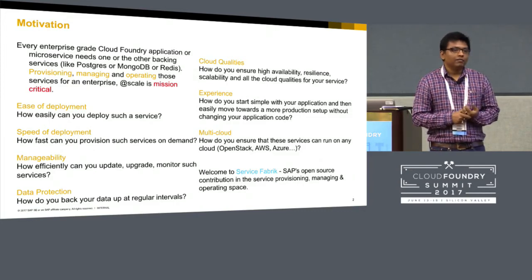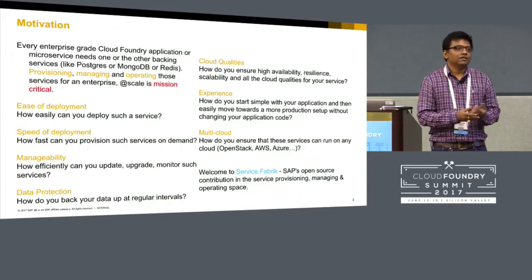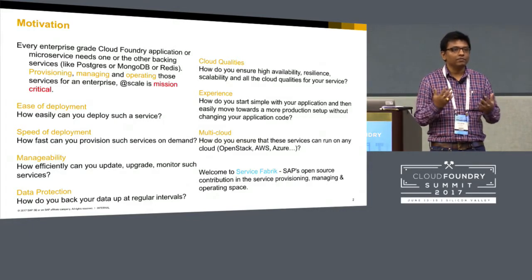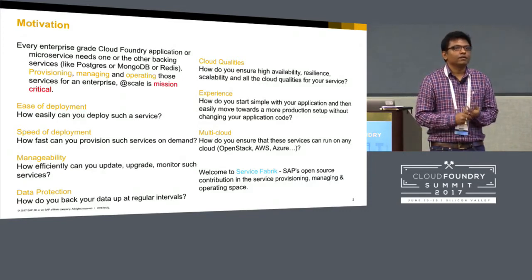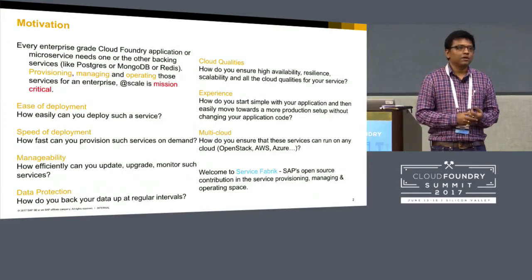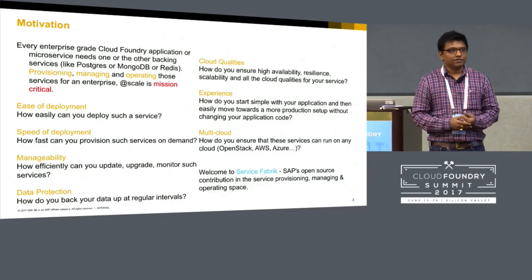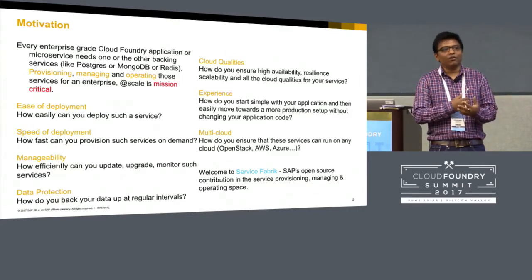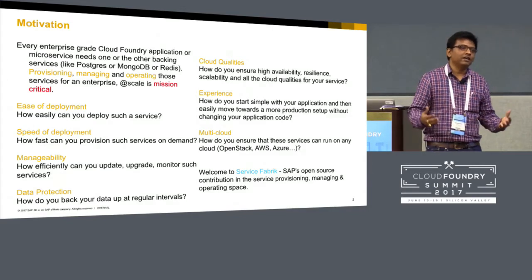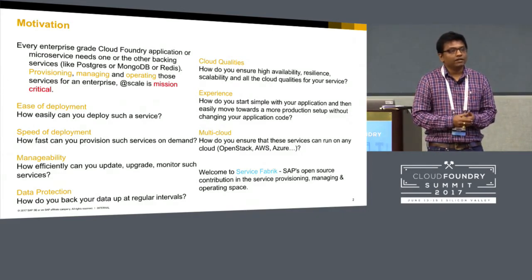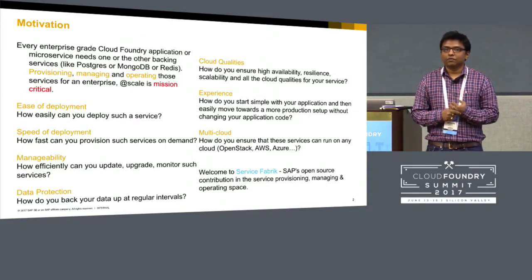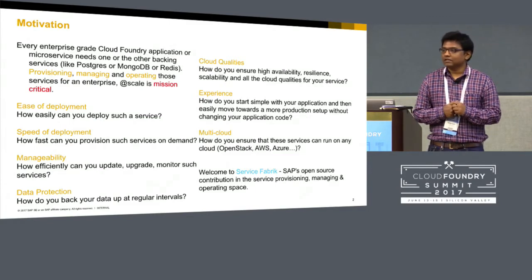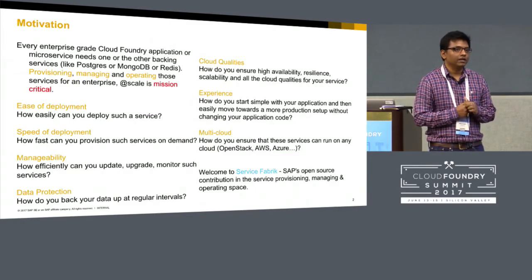Manageability — how efficiently can you update, upgrade, monitor? Now you have your own instance running — let's say a Postgres instance with five VMs, with high availability and failover all built in. You'll quickly realize that managing this system becomes a nightmare, and this is just one system. What if you have hundreds? In your company, many departments could all be using their own Mongo, Postgres, Rabbit — all three-to-five-node virtual machines running. How do you manage them? How do you update them? If there is a stemcell update, how do you do that?